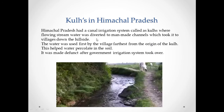Kools are a traditional canal irrigation system in Himachal Pradesh where flowing stream water was diverted to manmade channels, taking it to villages down the hillside. The water was used first by the village farthest from the origin of the kool, and it helped water to percolate into the soil. After the government irrigation system took over, this practice was affected.